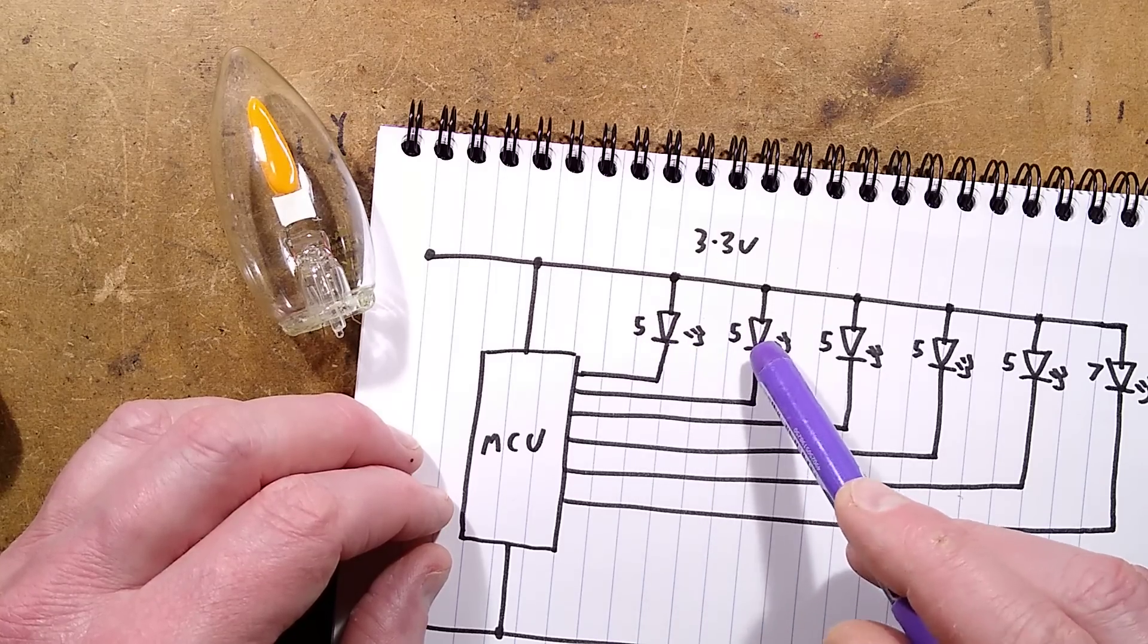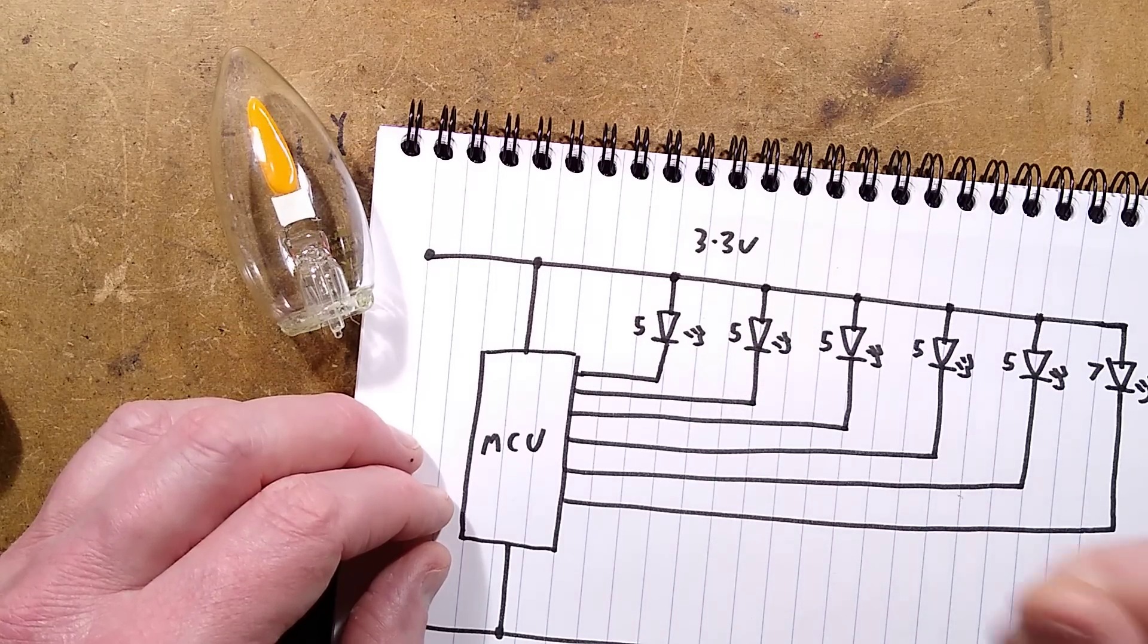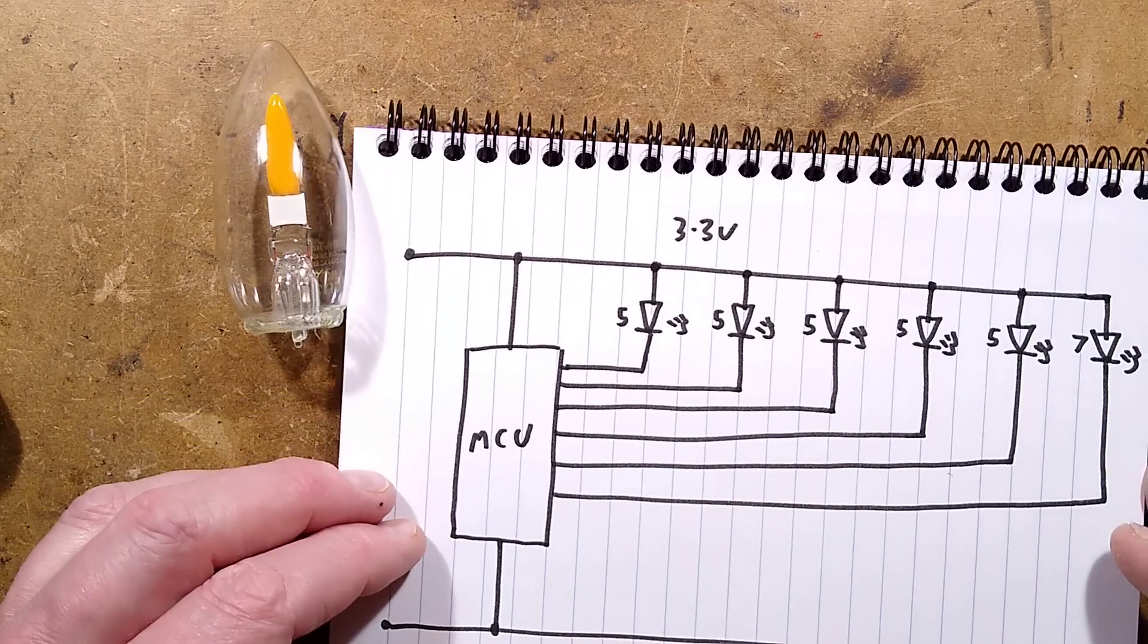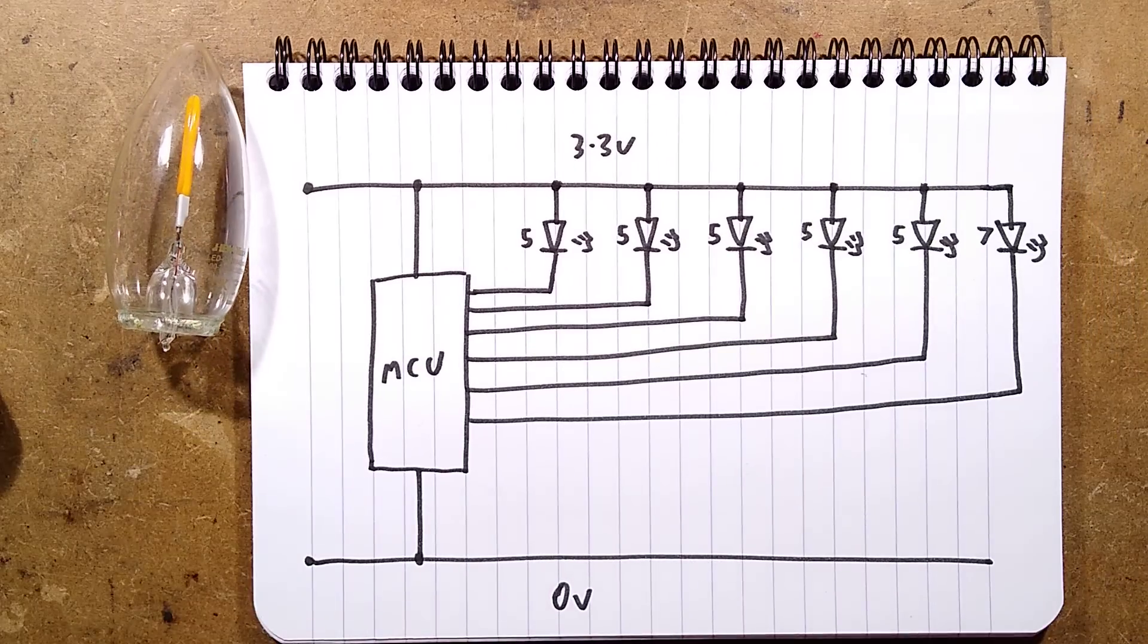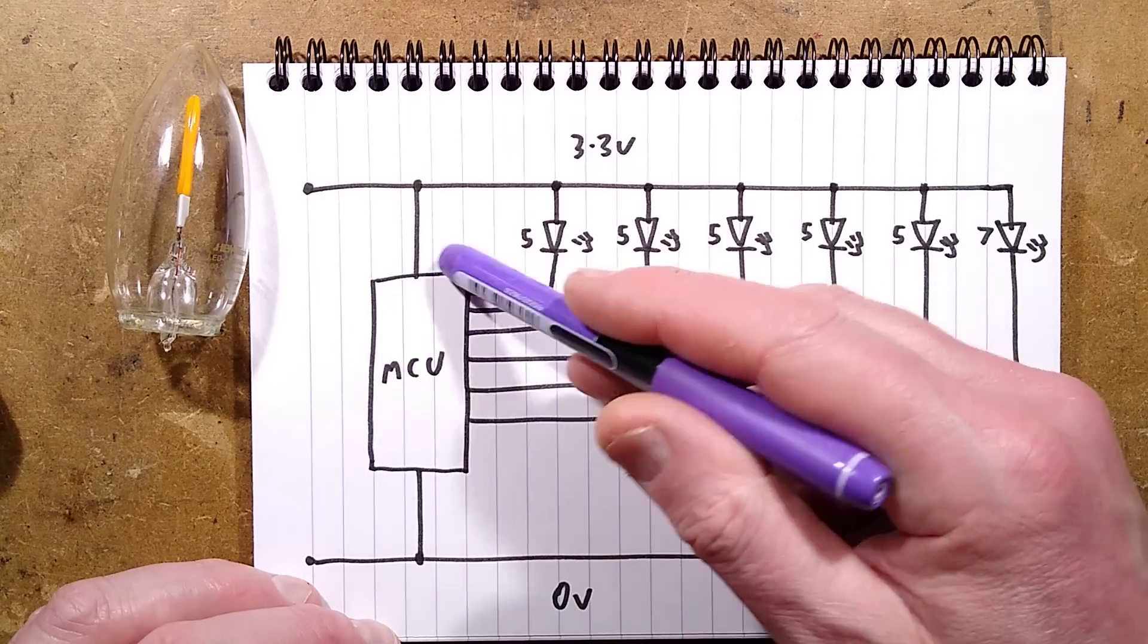It is the 3.3 volt supply, 0 volts, the microcontroller. The LEDs will almost certainly be referenced to the positive supply. The channels have five LEDs, five, five, five, five, and seven in parallel clusters to make up that flame effect. It's all done by software after that.